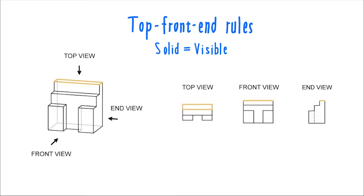Similarly, you can see where this middle section of the object is depicted in each view, and how these two lower sections are depicted in each view. Notice how you can see the gap that exists in the object in the top view and in the front.